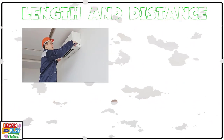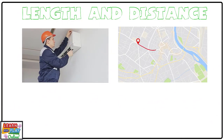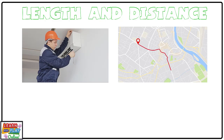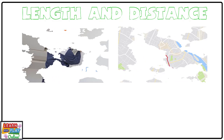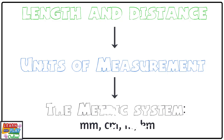When measuring the length of an object or the distance between two locations, we use formal units of measurement. In this video, we are going to use the metric system, which includes millimeters, centimeters, meters, and kilometers.